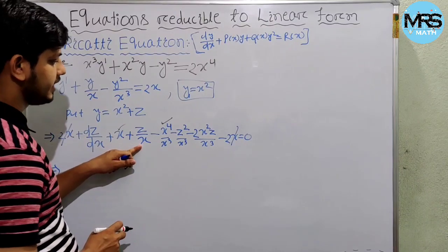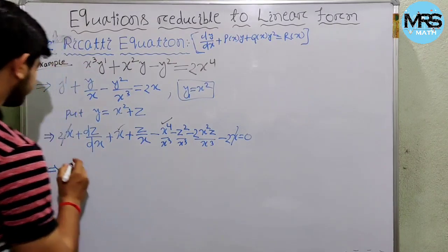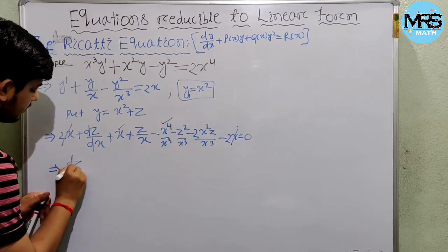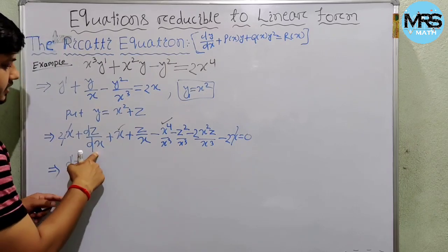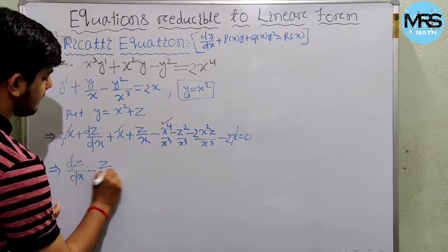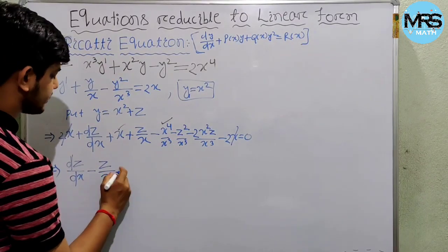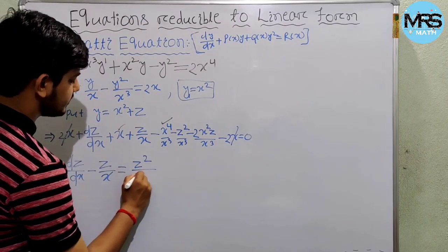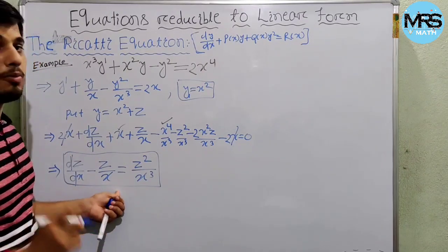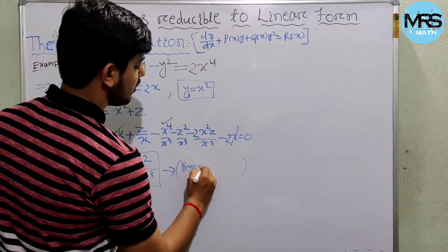After cancellation, we have z/x − 2z/x = −z/x, and −z²/x³ moves to the right side giving +z²/x³. So the resulting differential equation dz/dx − z/x = z²/x³ is of Bernoulli type.